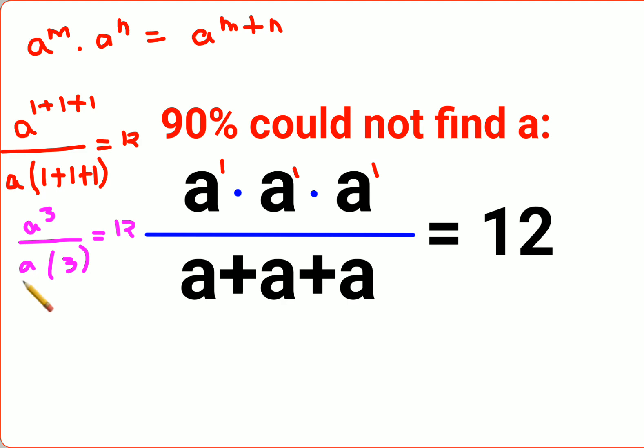So this becomes a raised to 3 minus 1 upon 3 is equals to 12. Now in order to find the value of a, you multiply both sides by 3. So we are trying to shift all the numbers on one side, so we get a square equals to 36.